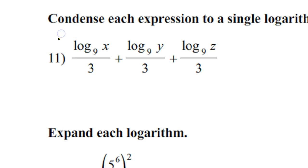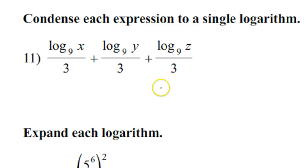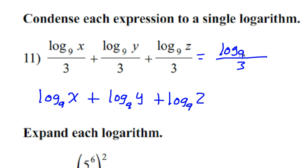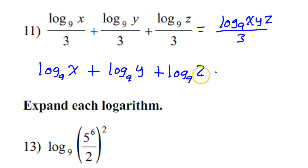All right number 11 is slightly different. It's talking about condensing to form a single log. Well first of all these all have like denominators. Okay so I can keep the like denominator and add up all these things. But the sum like if I do log base 9 of x plus log base 9 of y plus log base 9 of z, well that's just the log base 9 of xyz.